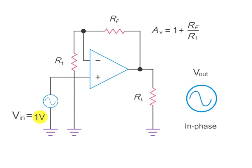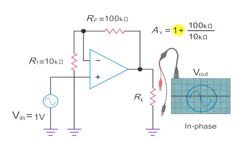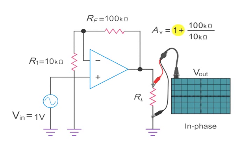For example, inputting 1 volt peak to peak with a feedback resistor value of 100 kiloohms divided by an R1 value of 10 kiloohms plus 1 will yield an in-phase output voltage signal with a gain of 11 volts at the RL resistor.